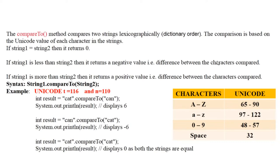The negative value is the difference between the Unicode values — we will see this with an example. The third possibility is a positive value: when string one is greater than string two, it returns a positive value, which is the Unicode difference between the characters compared. The syntax for compareTo() is: string1.compareTo(string2).